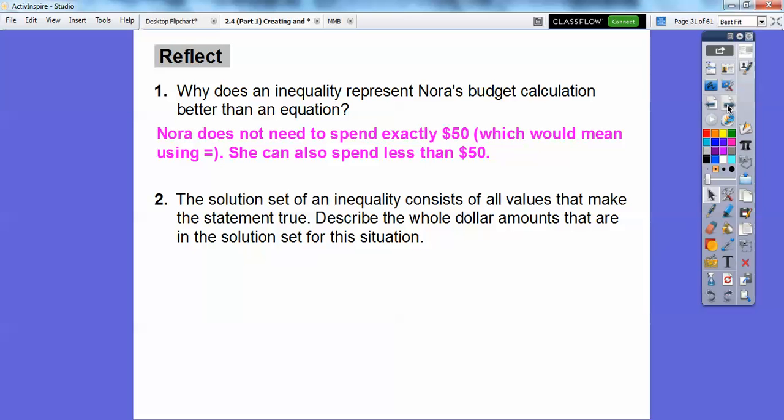The solution set of an inequality consists of all values that make the statement true. Describe whole dollar amounts that are in the solution set for this situation. So we couldn't do $6, that was over. We could do $4. Well, we could also do $5. So $6 was over the limit because it gave us $58, but $5 would be 8 times 5 plus 10, and that's less than or equal to 50.